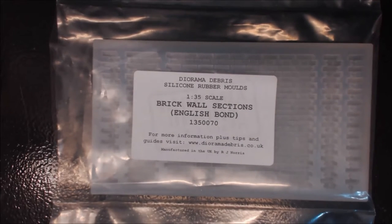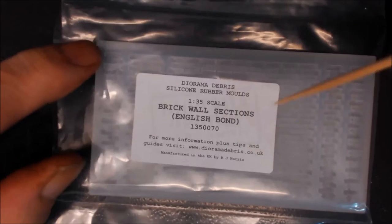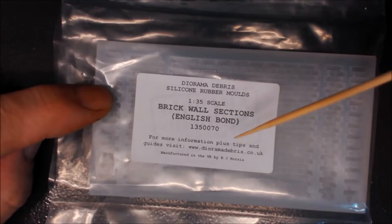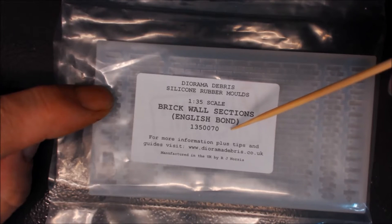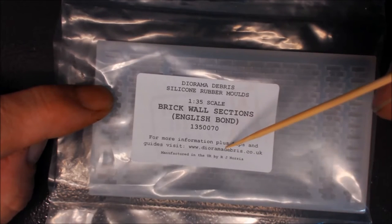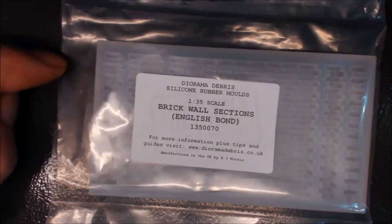Another new mold, this is from Diorama Debris. I'll run through it as I normally do. 1:35 scale, this is a brick wall section in English Bond. The mold number is 135-0070, produced in the UK by RJ Norris.